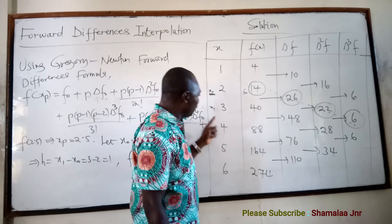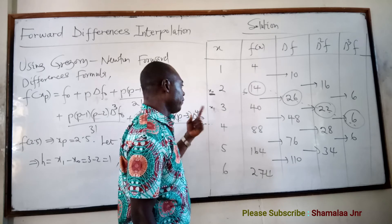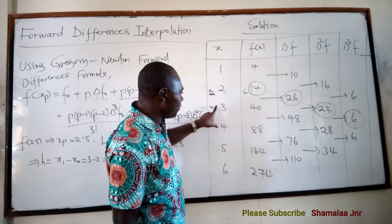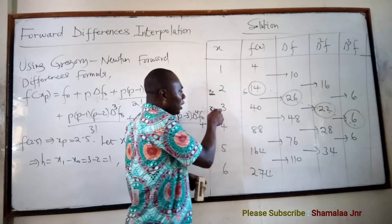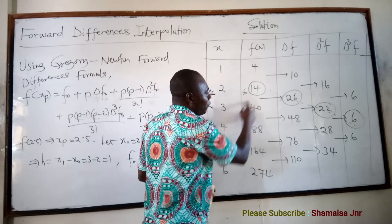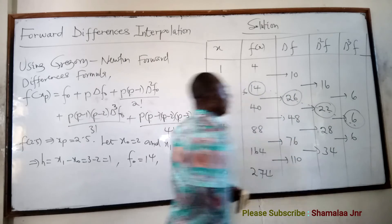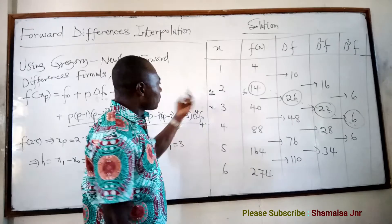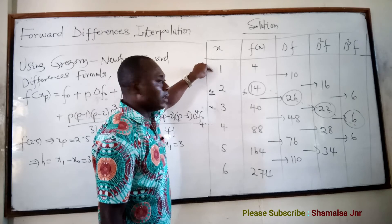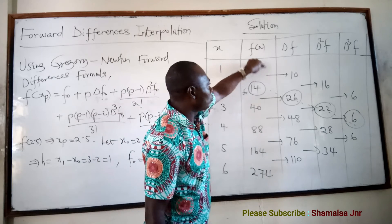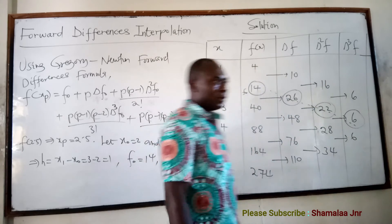To further illustrate: if asked to find f(3.5), that lies between 3 and 4, so x=3 would be x0 and f0 would be 40. If asked for f(1.5), x=1 would be x0 and f0 would be 4. In each case, delta f0, delta squared f0, and delta cubed f0 are read forward along that row of the difference table.